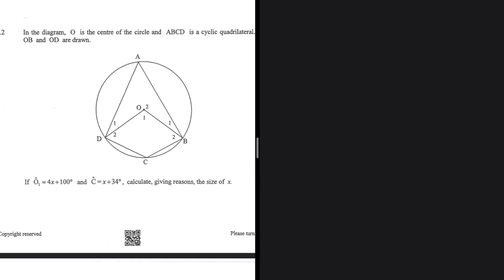In the diagram, O is the center of the circle and ABCD is a cyclic quadrilateral. OB and OD are drawn. If O1 equals 4x plus 100 and C equals x plus 34, calculate, giving reasons, the size of x.